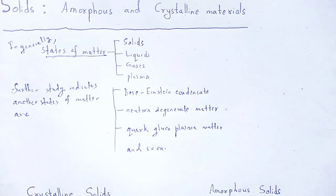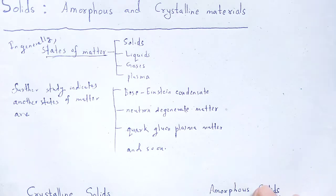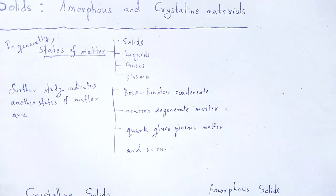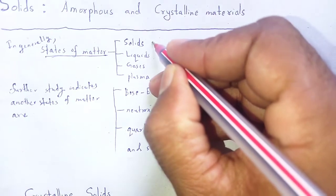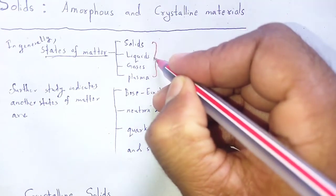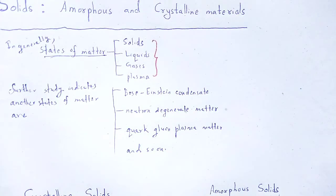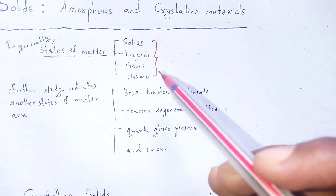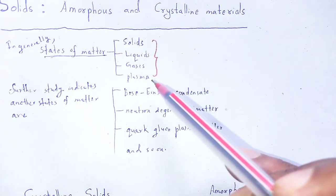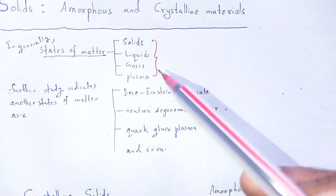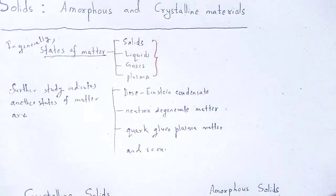Up to 22 number of states of matter have been introduced as far as research and experiment on solid states is concerned. The first four states — solids, liquids, gases and plasma — are low energy states, or we can say classical states.